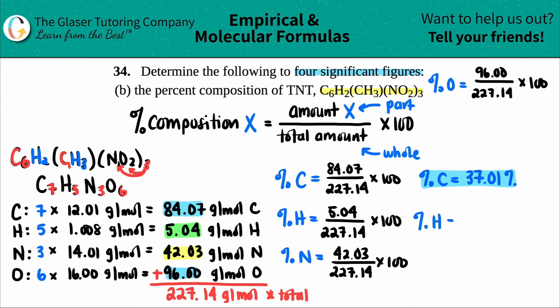The percent hydrogen, 5.04 divided by 227.14, times 100. Four sig figs, I get 2.219%. So roughly, hydrogen doesn't really take up much percent or mass in general.